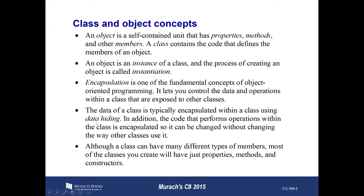Encapsulation is also called data hiding. Although a class can have many different types of members — events, a class within a class, a subclass — most of the classes you'll create will just have properties, methods, and constructors. About 90% of your classes should just have those three things. If you're building a custom class or custom list, you might have other things like operator overloads, but most of the time your classes will just be plain old C-sharp classes, or POCOs, that don't have a lot in them.